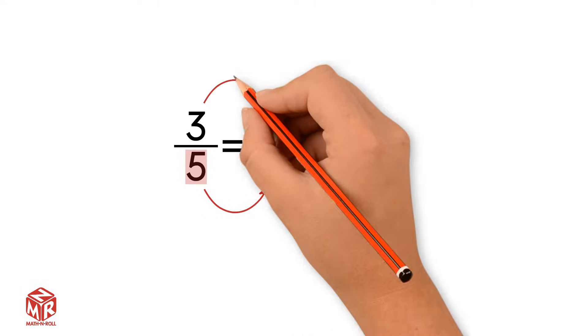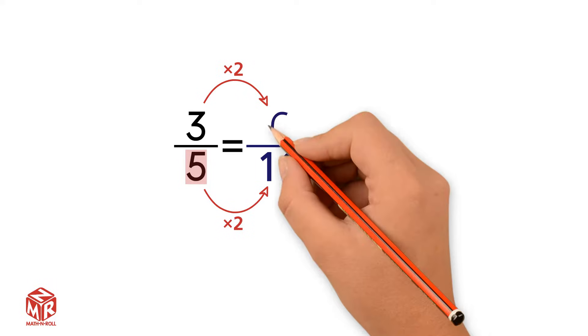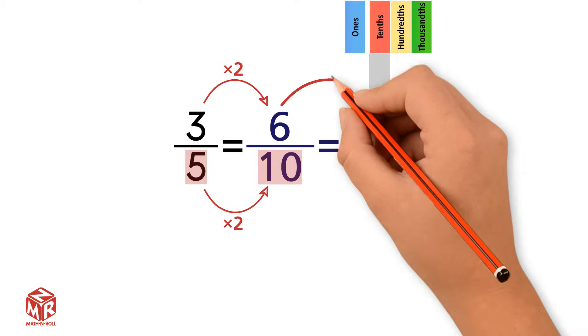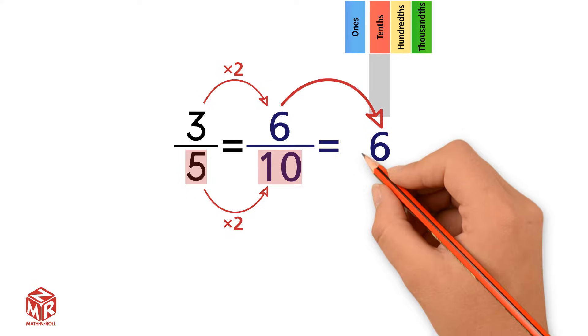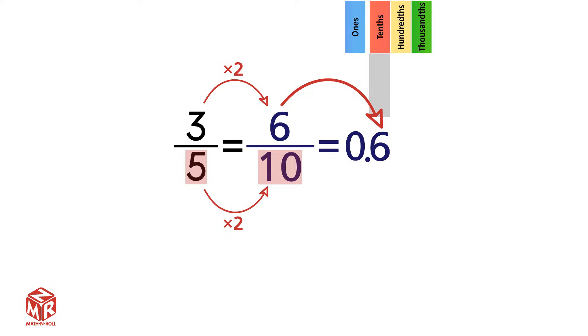We do this by multiplying both the numerator and the denominator by 2. We get 6 over 10, or 6 tenths. We put the 6 in the tenths place, and then we write the decimal point between the ones and the tenths column. Then we add the zero. So we get 0.6.